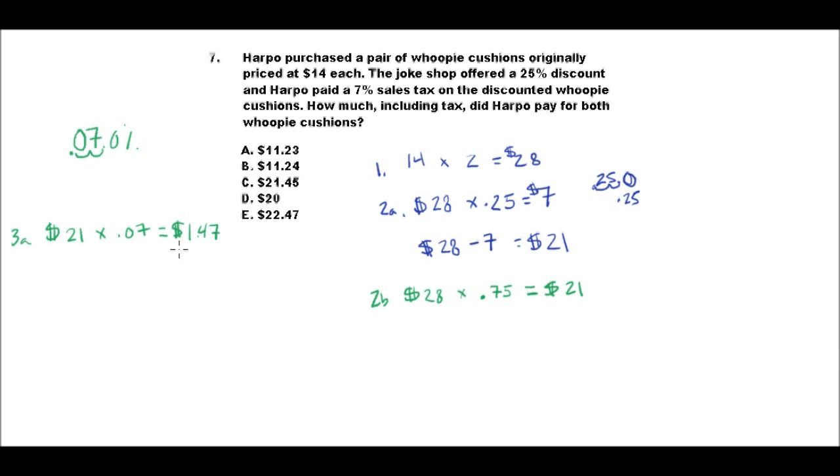So then you could add that, because he is paying sales tax on top of the $21. So if we take 21 plus 1.47, that is $22.47. Okay.